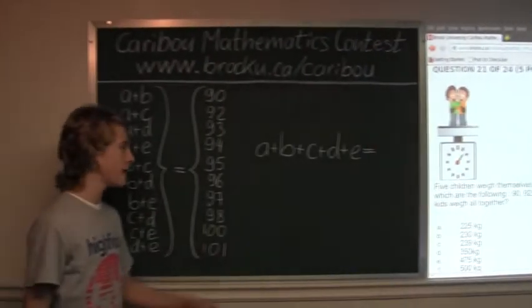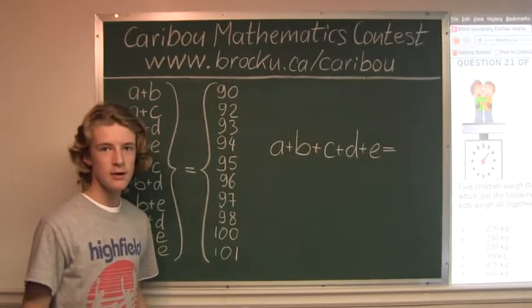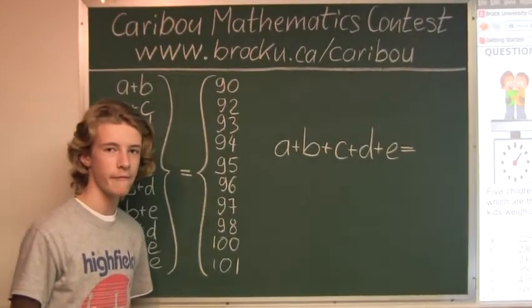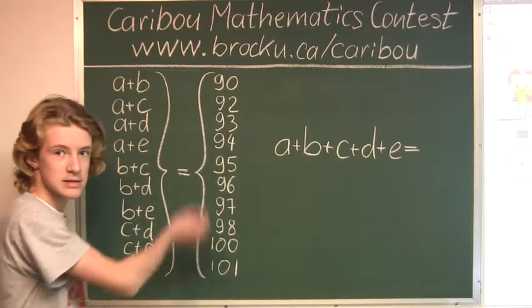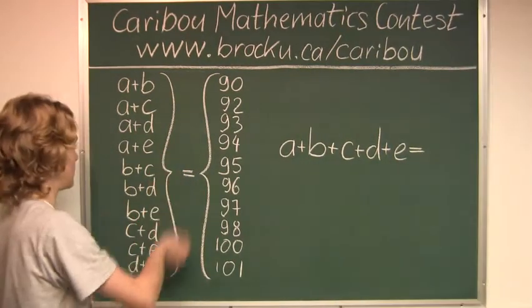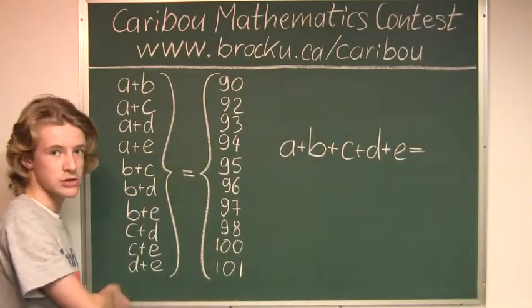So let the 5 letters A, B, C, D, and E represent the weights of all 5 children. So these are all the weights, and these are all the pairs of the children.